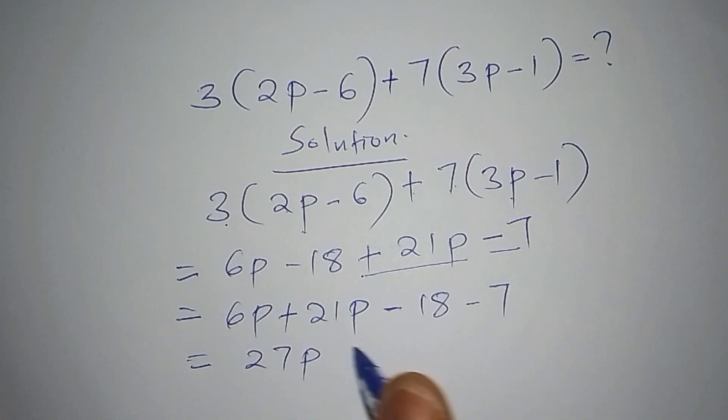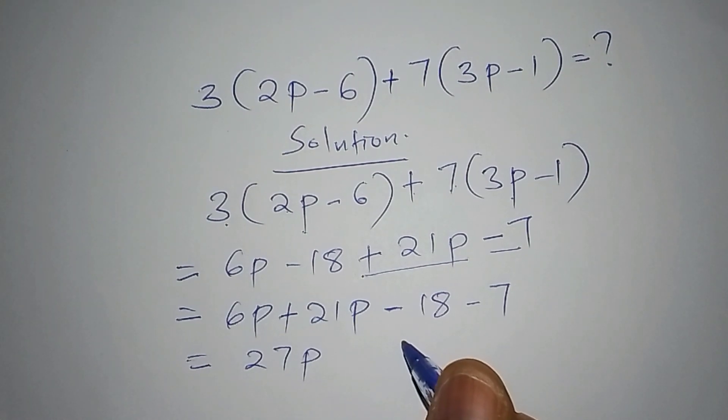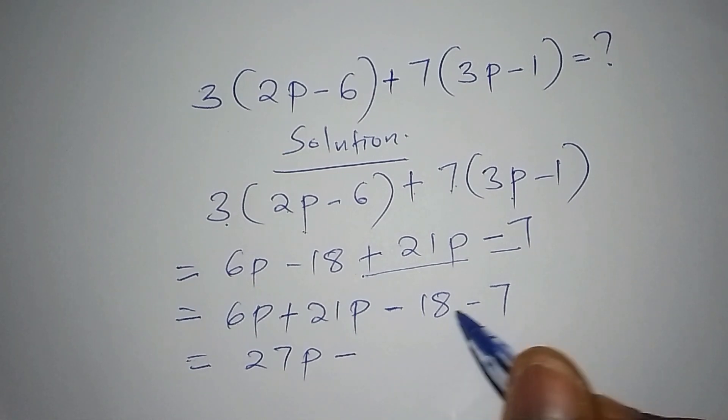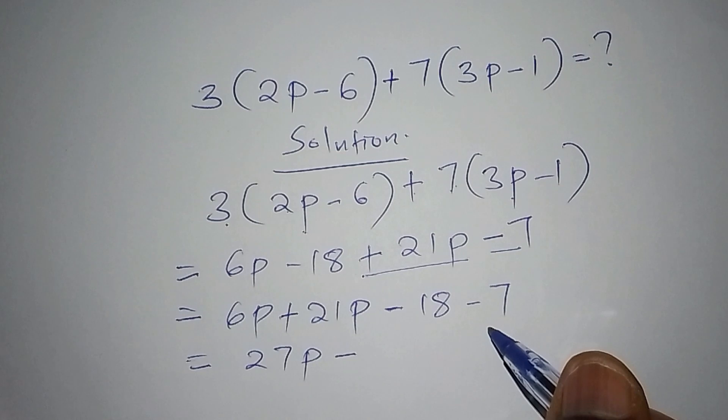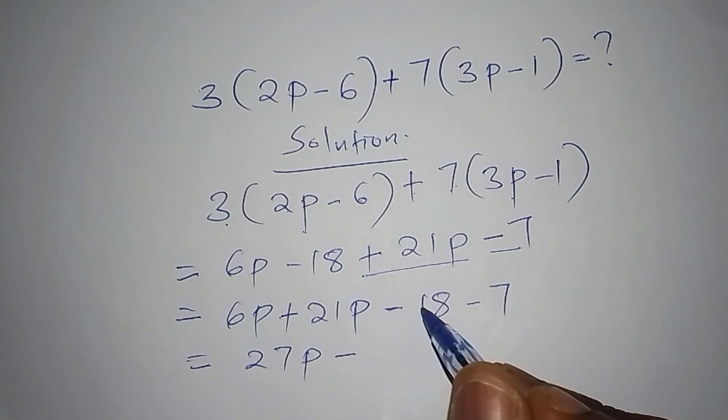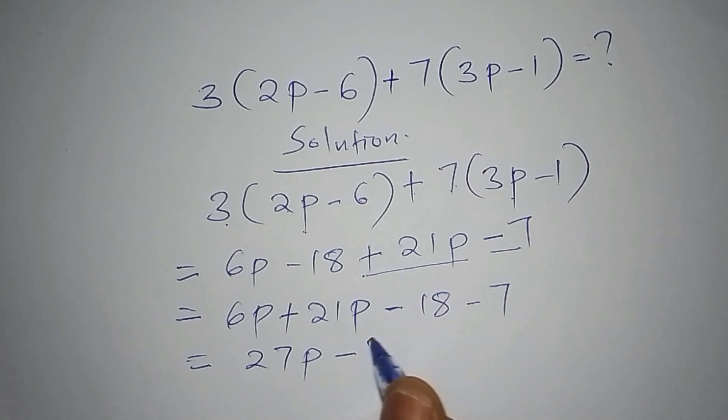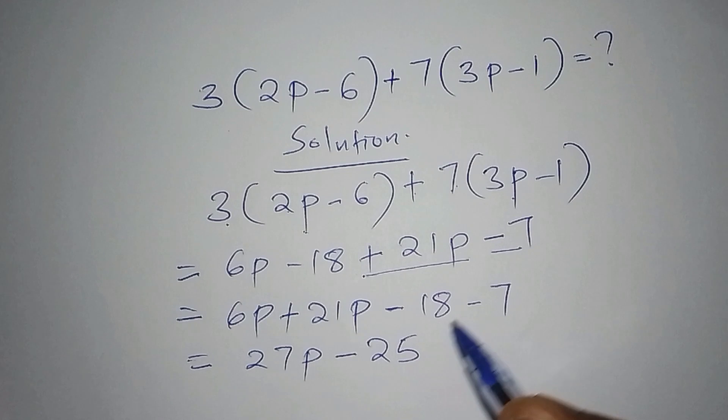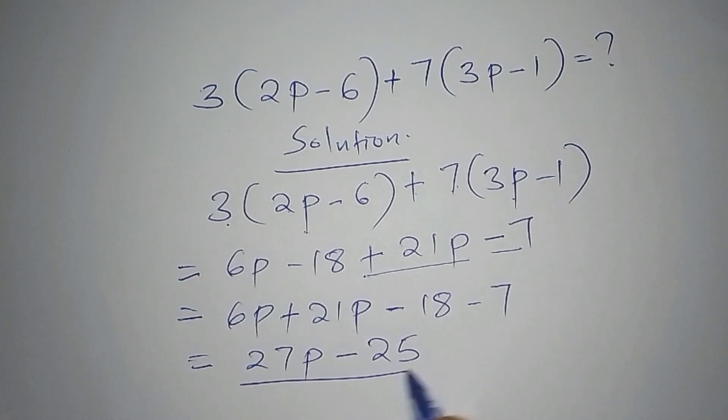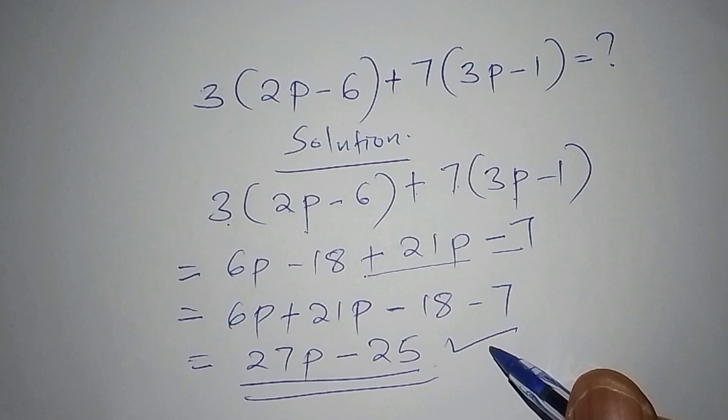So after having the 27p, then we shall now subtract. This subtraction sign, 18 subtract from 7, we shall have minus 18 minus 7. So minus 18 minus 7 shall have minus 25. So our answer is 27p minus 25. This one now becomes the correct answer.